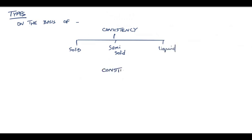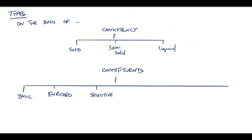We can classify culture media on the basis of consistency of the media into solid, semi-solid, and liquid, and on the basis of constituents in the media into basic, enriched, selective, indicator, transport, and anaerobic media. One thing to note is indicator media is also known as differential media. Now let's talk a little about each of them.